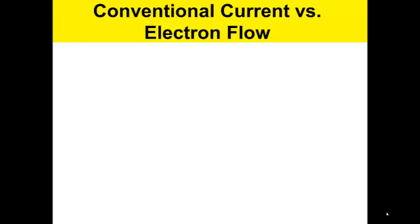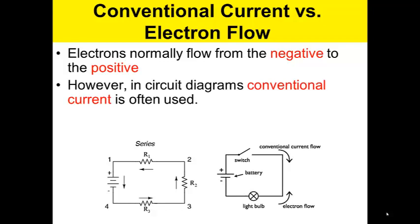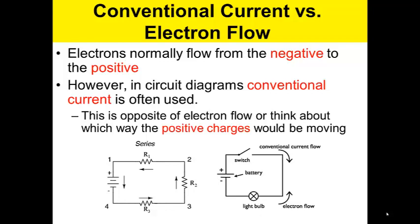Conventional current versus electron flow. Electrons normally move from the negative to the positive. However, in circuit diagrams, conventional current is often used. This is the opposite of electron flow, or think about which way the positive charges would be moving.